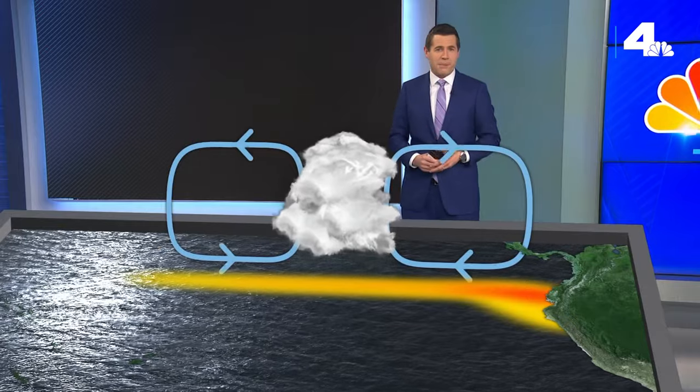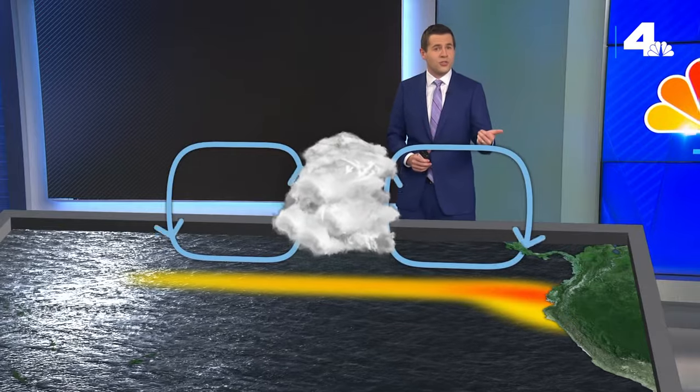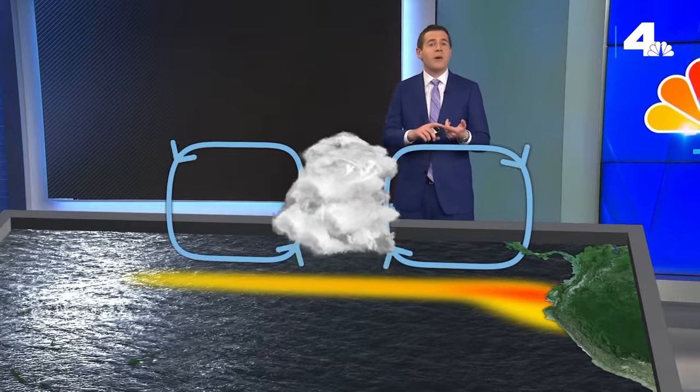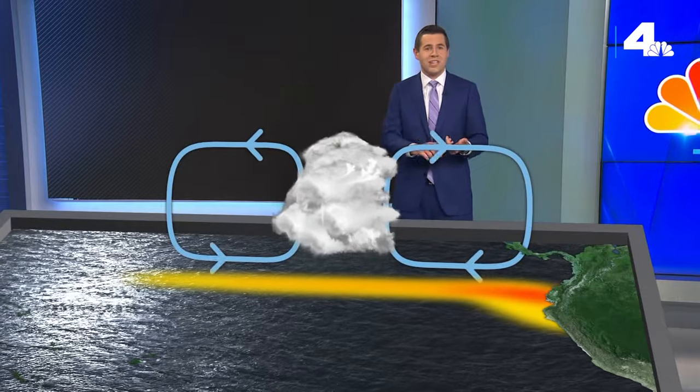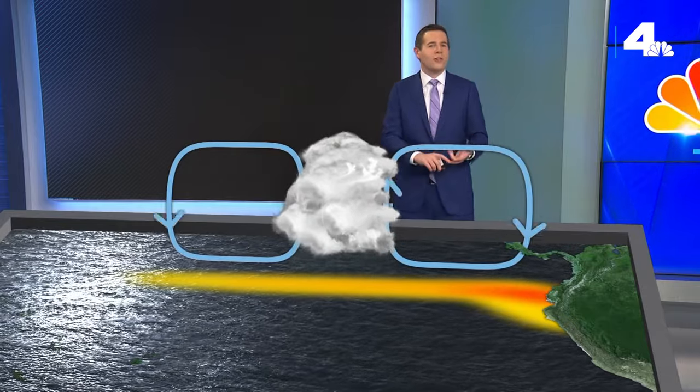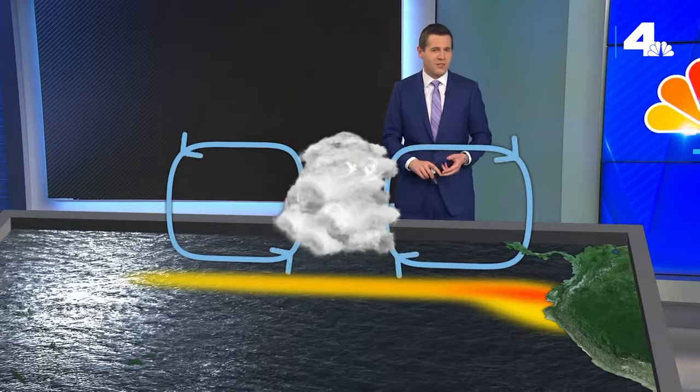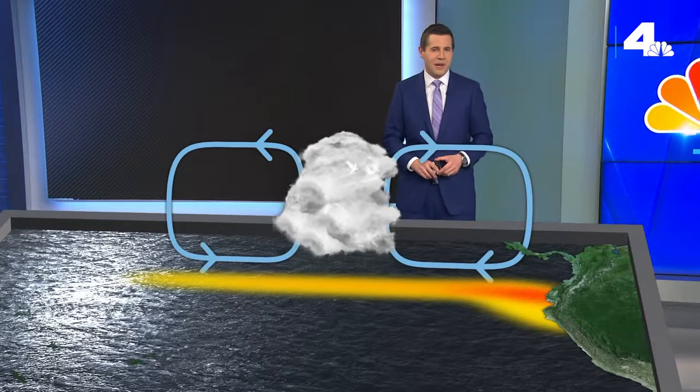In La Niña years, the opposite of El Niño happens. The trade winds are stronger, upwelling increases, and colder waters collect off the Pacific coast of South America.